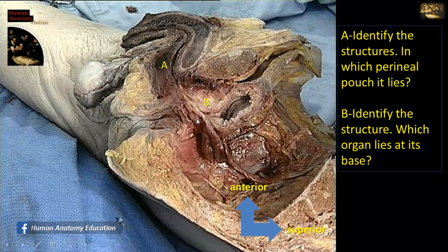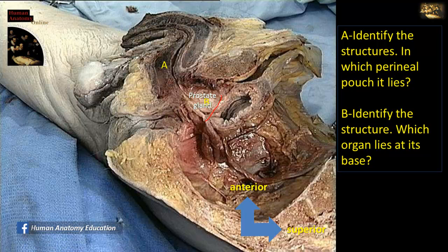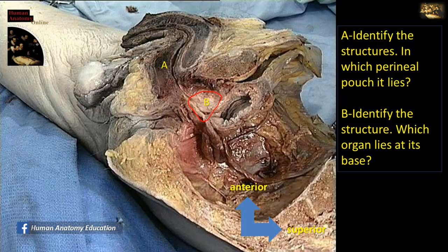Identify the structure at B and name the organ that lies at its base. Oriented with the pubic symphysis anteriorly and the bladder behind it, at the neck of the bladder lies the prostatic gland. The prostatic gland has its apex below and its base above — it looks like a chestnut. The base of the gland lies opposite the neck of the bladder, while the apex of the gland lies opposite the urogenital diaphragm.